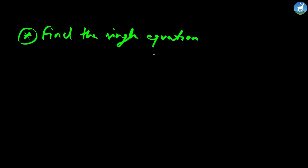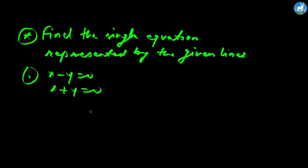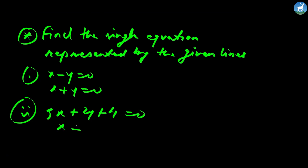Now let's do an exercise for this class. We need to find the single equation represented by two given straight lines. The equations are: x minus y equals 0 (line 1) and x plus y equals 0 (line 2). Taking the product: (x plus y)(x minus y) equals x squared minus y squared equals 0. So the pair of straight lines is represented by x squared minus y squared equals 0.